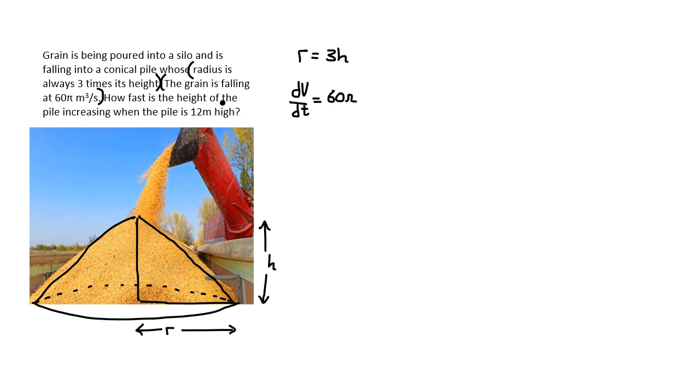How fast is the height of the pile increasing when the pile is 12 meters high? That's another piece. We know that we're dealing with a situation when h equals 12. And asked about a situation, or rather asked what dh dt is. dh dt is a question mark. That's how fast is the height increasing?